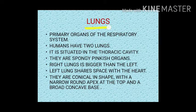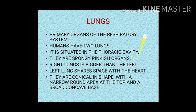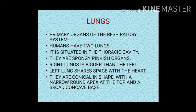Moving on to the lungs — the primary organ of the respiratory system. Humans have two lungs situated in the thoracic cavity. They are spongy, pinkish organs. The right lung is bigger than the left, and the left lung shares space with the heart. The lungs are conical in shape with a narrow rounded apex at the top and a broad concave base.